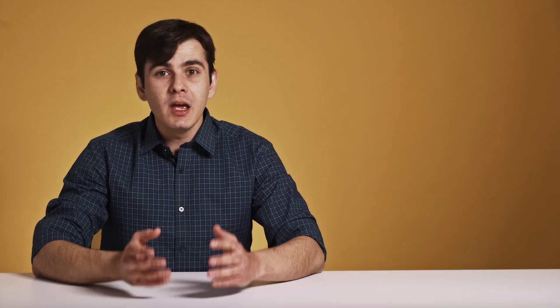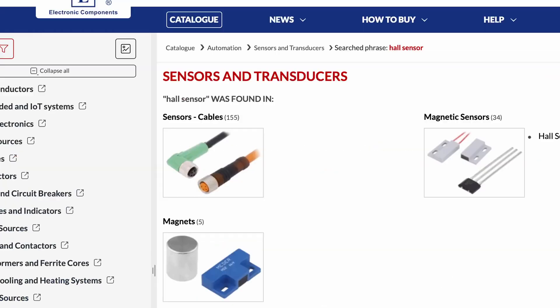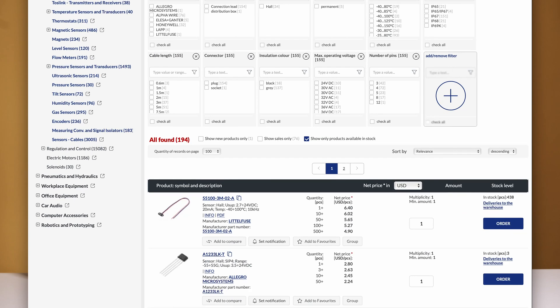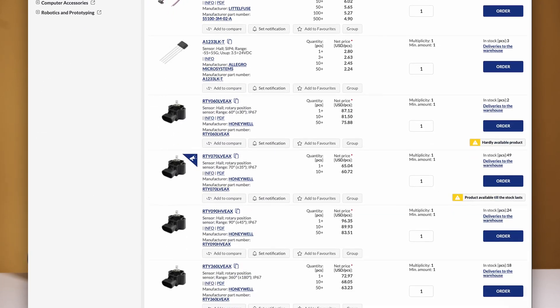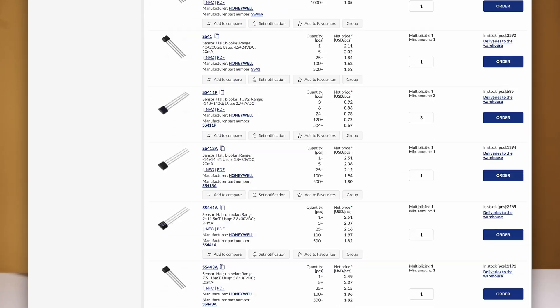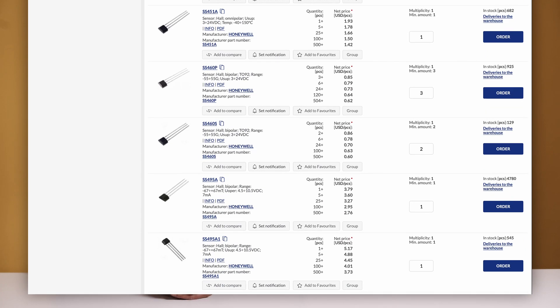Today, the Hall sensors are available in all shapes and colors. If we go to TMEU, we will find over 100 different Hall sensors for a wide range of operating temperatures, supply voltages, measuring ranges, and different types of cases.